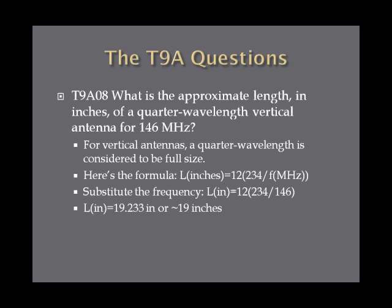What is the approximate length in inches of a quarter-wavelength vertical antenna for 146 megahertz? For vertical antennas, a quarter wavelength is considered to be a full-size antenna. The formula to memorize is: length in inches = 12 × 234 ÷ frequency in megahertz. Substituting 146 MHz: 12 × 234 ÷ 146 = 19.23, or roughly 19 inches — and the answer on the exam is 19 inches.